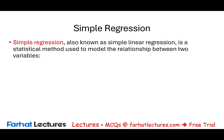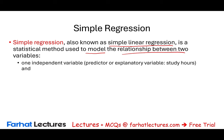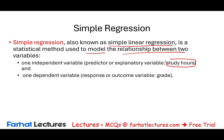Simple regression, also known as simple linear regression, is a statistical method used to model the relationship between two variables. It's called simple because you are using one independent variable and one dependent variable. For example, the independent variable is study hours — the predictor — and the dependent variable is your grade. The more hours you study, the higher your grade. That's the correlation.